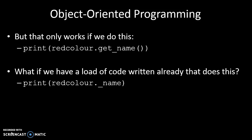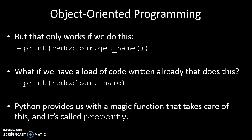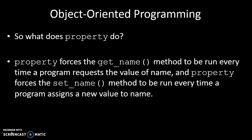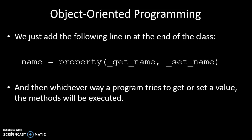Because you've got all this legacy code that's just printing out dot underscore name, and it might be hard to find and revise it all. We do have a magic function called property — it takes the statement print redColor.underscore_name and treats it as if you've said print redColor.get_name, and runs that function. The property forces the get_name method to run every time we try to print the value of name, and forces set_name to run every time we try to assign a new value to that variable. We just add the following line to the end of the class: name = property(get_name, set_name), and whichever way the program is called to get or set a value, these methods will be executed.